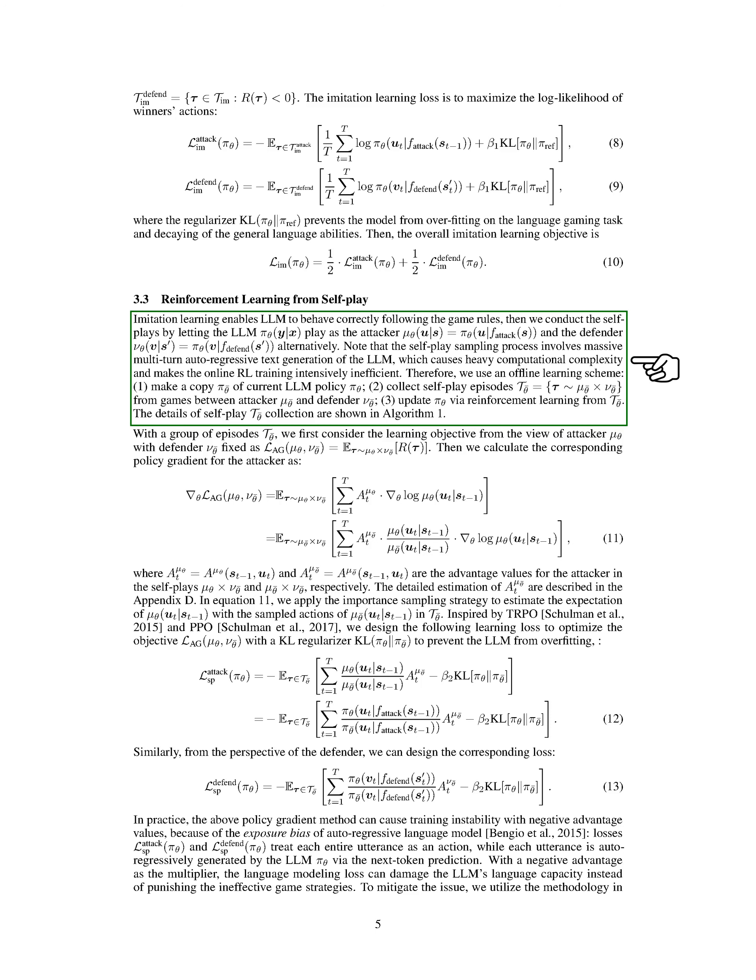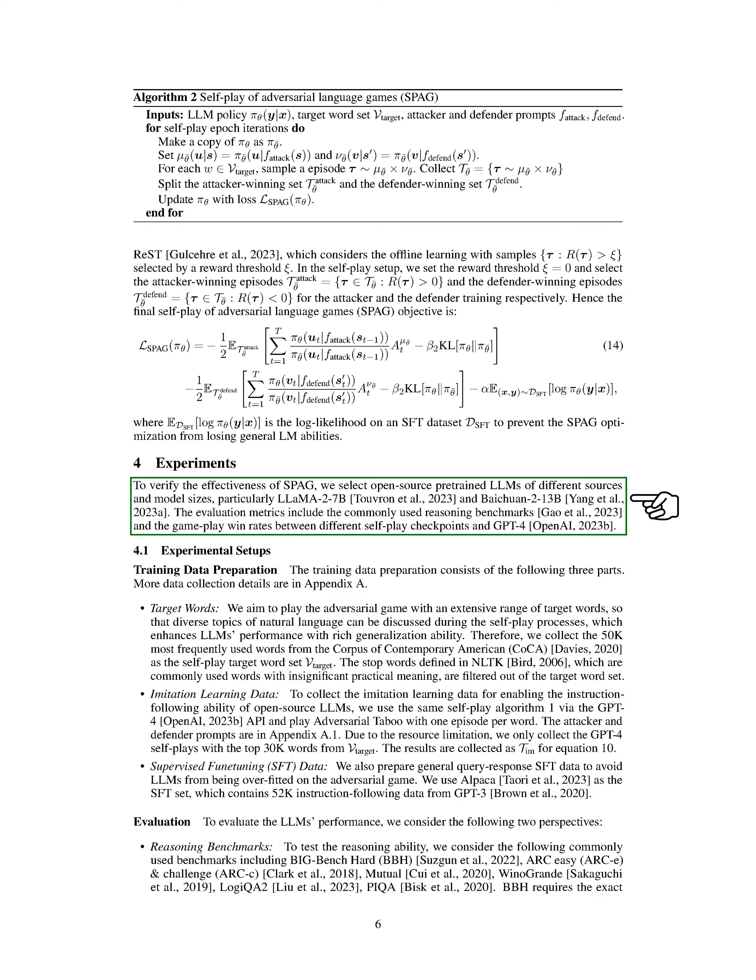Experiments. In this section, we conducted experiments to assess the effectiveness of SPAG. We chose various open-source pre-trained LLMs of different sizes and sources, such as LAMA 2-7B and Bychuan 2-13B. Our evaluation criteria included reasoning benchmarks and gameplay win rates between different self-play checkpoints and GPT-4. For the experimental setups, we divided the training data preparation into three parts.